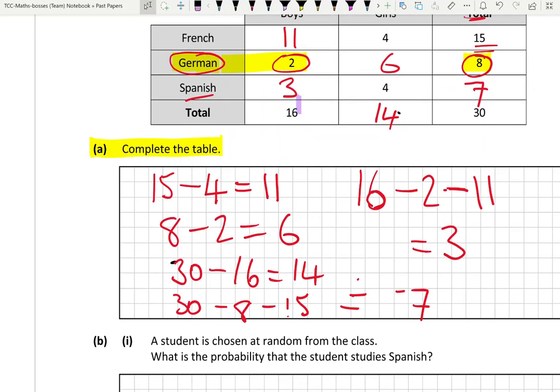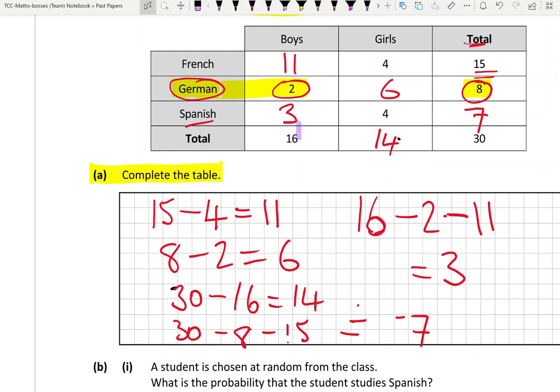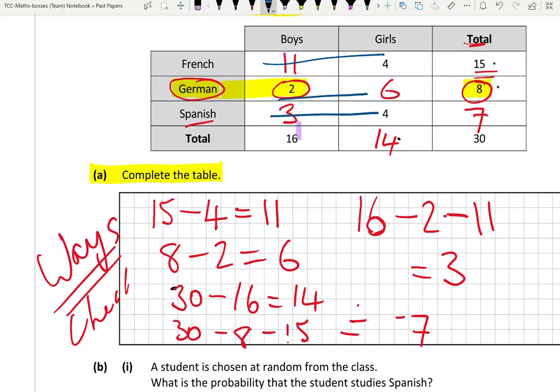Now should I just leave it at that? No, you should check. It's a two-way table, so we could check that all our ways are good. So it's very important to check your work - it's a good thing to learn, especially in problem solving. Is it true that these three numbers add up to 16? Yes. These three numbers add up to 14? Yes. These three numbers add up to 30? Yes. Everything has been checked and we're certainly right.